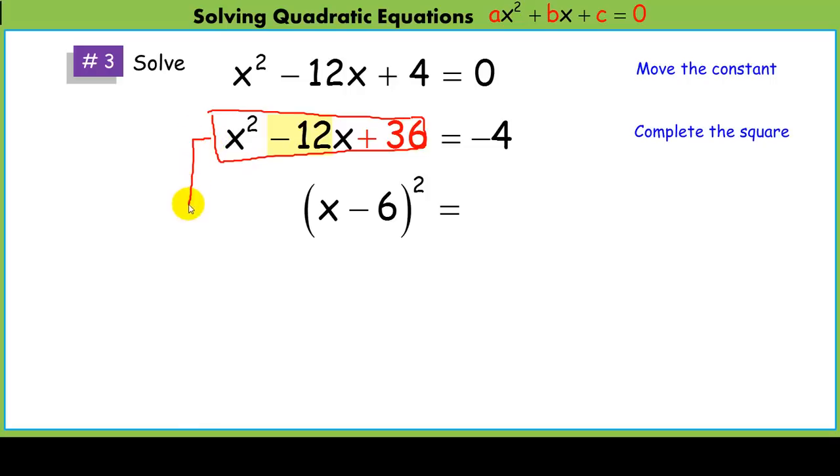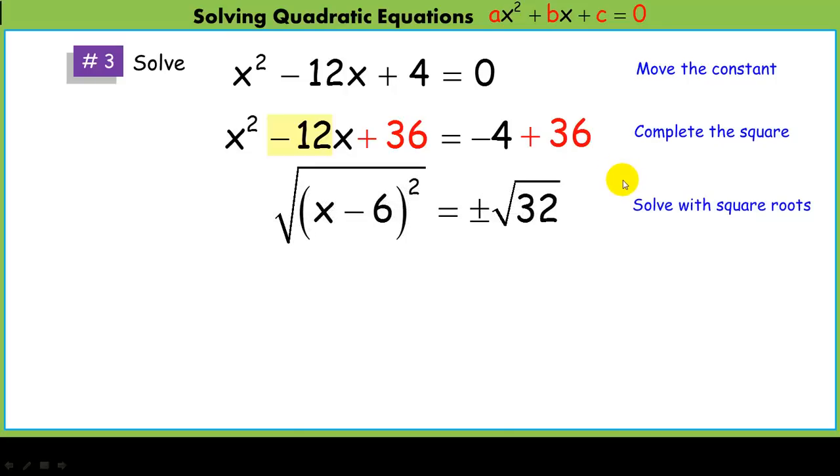And again, when we make that, we just want to be able to replace it with this. But to balance out the equation, we have to add 36 to both sides, giving us 32. Taking the square root of both sides, we get it down to here. Add 6 to both sides, and it looks like it's done.